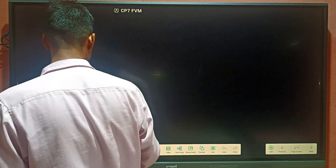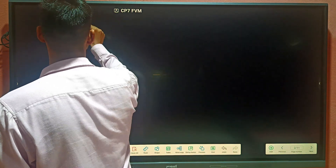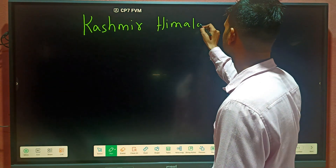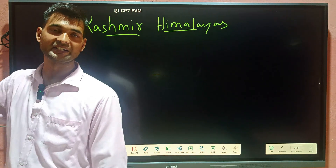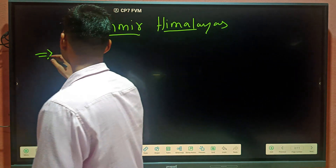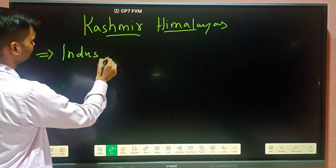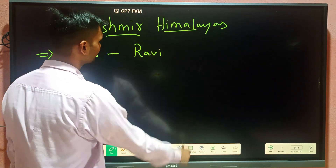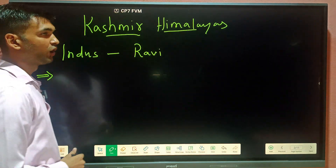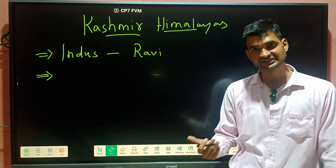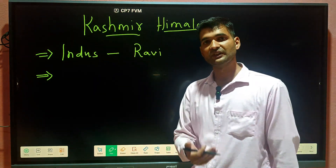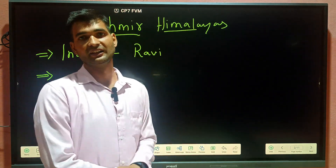The first division is Kashmir Himalayas. The demarcation of Kashmir Himalayas, as we discussed earlier, is from river Indus to river Ravi. One important thing regarding Kashmir Himalayas is that all the three vertical divisions — or four including Trans-Himalayas — Greater Himalayas, Lesser Himalayas, and Shivaliks — are clearly visible in Kashmir Himalayas.